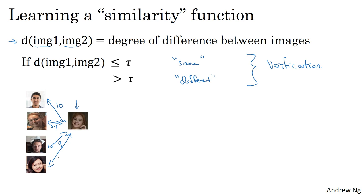And based on this, you would figure out that this is actually that person, which is Danielle. And in contrast, if someone not in your database shows up, as you use the function D to make all of these pairwise comparisons, hopefully D will output a very large number for all four pairwise comparisons. And then you say that this is not any one of the four persons in the database.